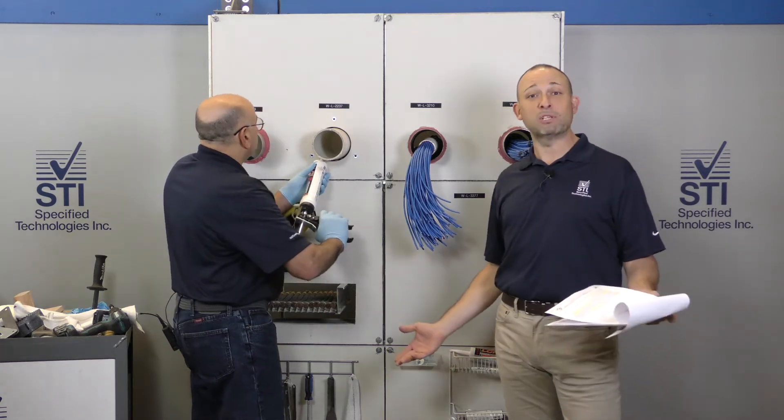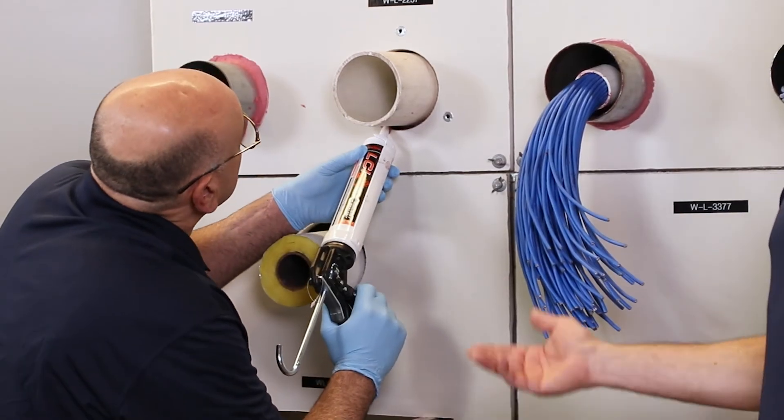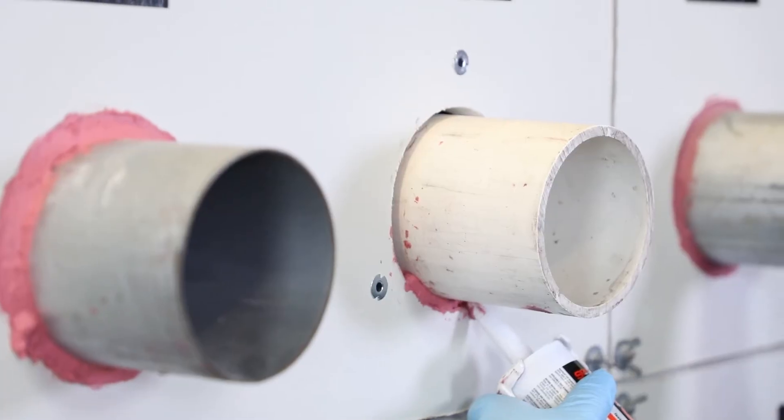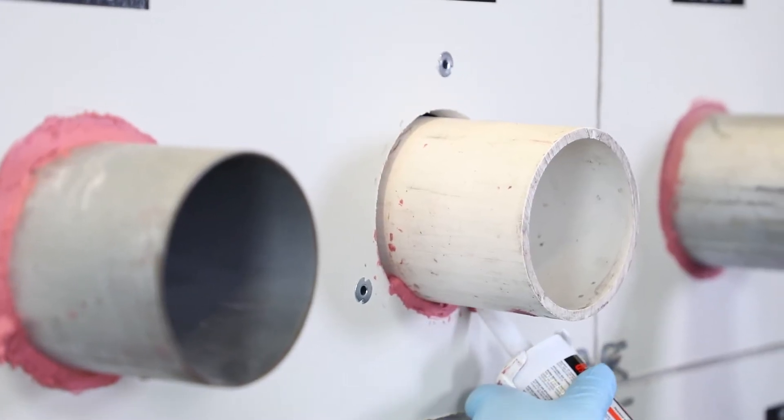The intumescent that we're going to need to collapse this pipe is going to come in the form of the collar and that's going to be step two.